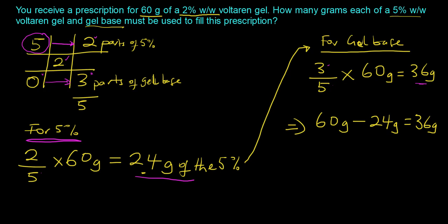But like I said, the easiest or fastest approach is to subtract the amount of the 5% from the total quantity you are compounding, and that gives you 36 grams. Now, this is important when you are taking an exam. Alright, so that's how you solve this problem. I hope you found it beneficial. If you have any more questions, just send me an email.